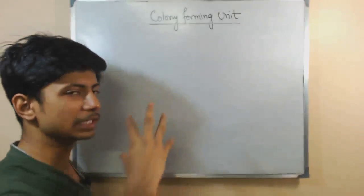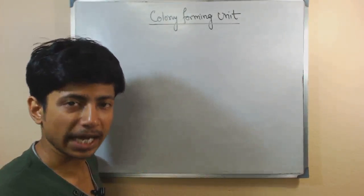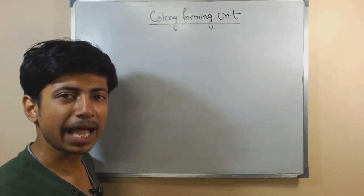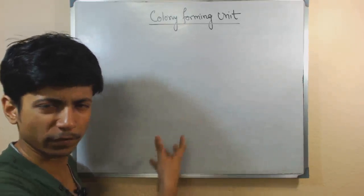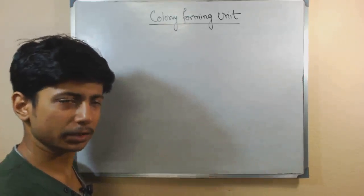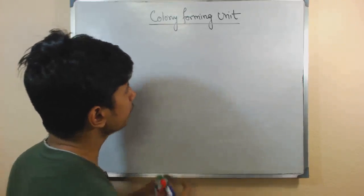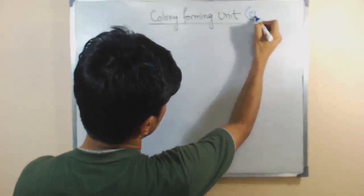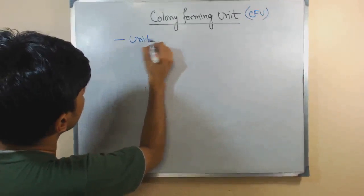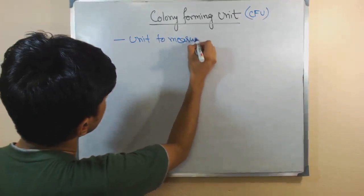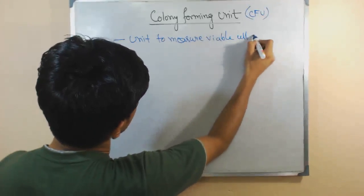Colony Forming Unit. Colony means it's a mass of bacteria or fungi growing in an agar plate. It grows on whatever kind of agar we use for fungi as well as for bacteria. The idea here about Colony Forming Unit is that it is a unit to measure the viable cell count.